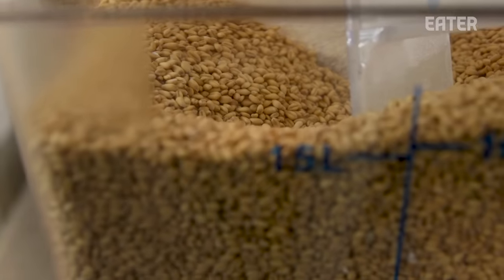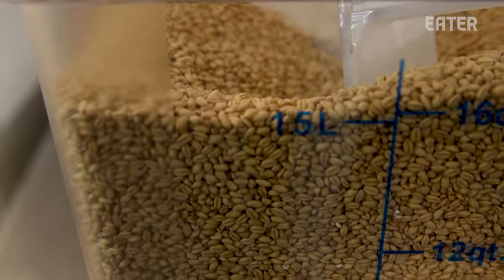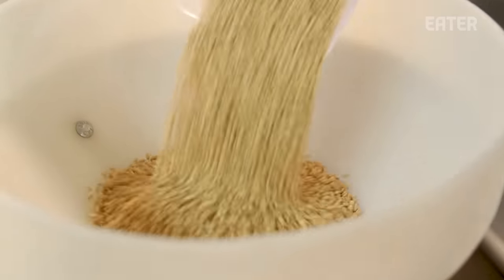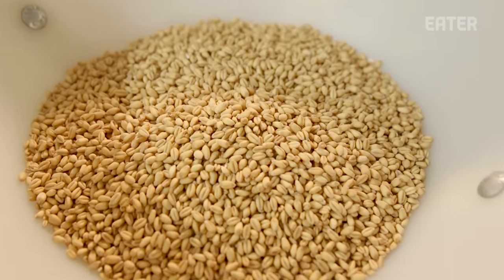First stuff we do is we mill our wheat berries that we prep for the dough. A lot of the wheat we have here in the States is banned in Europe.